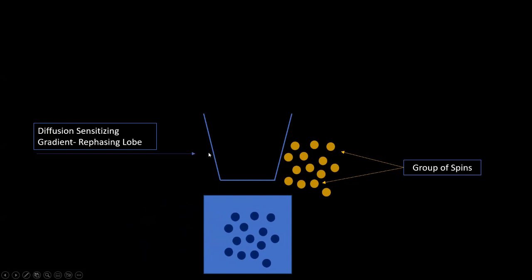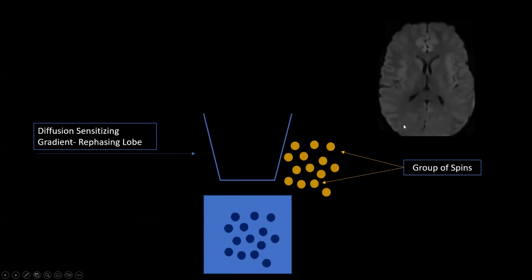What will happen now? This rephasing lobe of the gradient tries to get signal back from the pixel, assuming that the green spins are inside the pixel. But in reality, the blue spins came into the pixel, which was never dephased by the first gradient. So, therefore, instead of rephasing or getting signals back, this gradient dephases the signal, meaning it killed all the signals. This happens again and again. We won't get any bright signal. So, here is an example image of diffusion-weighted imaging of normal brain. We are not seeing any kind of bright signal in this particular image.